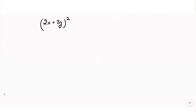The identity we are going to use is: a plus b whole square equals a squared plus 2ab plus b squared. If you look at the question, it is also in the form of (a + b) whole square.